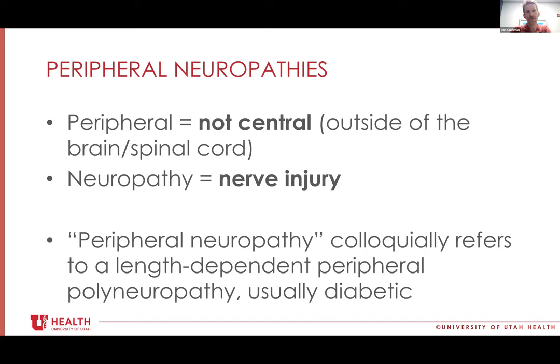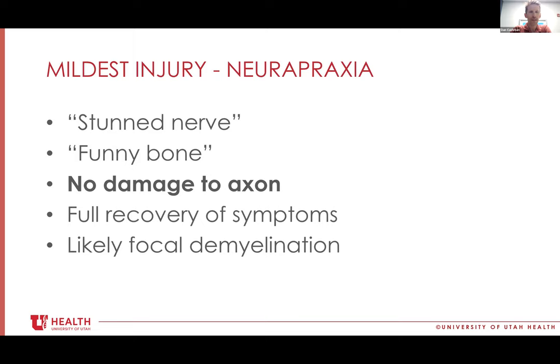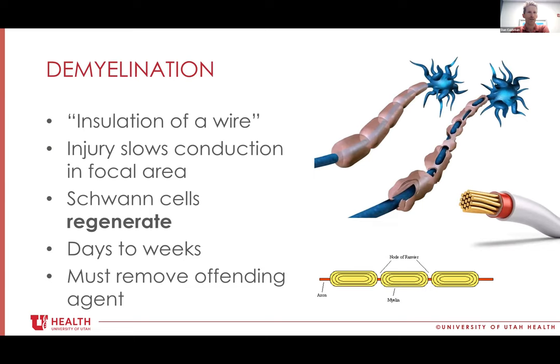Let's start with some basics on nerve injuries. The best way to look at the spectrum: the most mild nerve injury you'll see all the time is neuropraxia. If you hit your funny bone, that's neuropraxia. The key is you're not damaging the axon at all — you'll get full recovery. We think the reason is focal demyelination at the nerve, and things go away. That's a 'stunned nerve.' You see that with stingers and lots of other things. As for the myelin being injured — that's demyelination. Schwann cells and nodes of Ranvier are involved. Schwann cells regenerate well, over days to weeks.